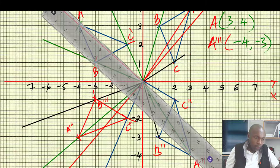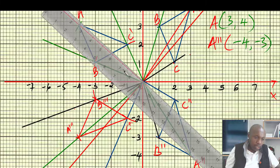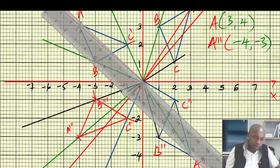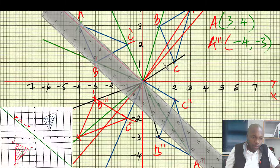If you place a ruler there, acting as the mirror line y = -x, you notice — because of the properties of reflection — that the object and the image are equidistant from the mirror line. Look at point B and B-triple-prime with the mirror line between them. Then look at A and A-triple-prime, and C and C-triple-prime. The mirror line passes through the center, confirming this is a reflection.